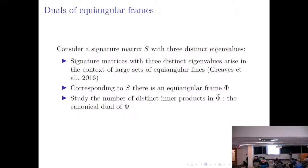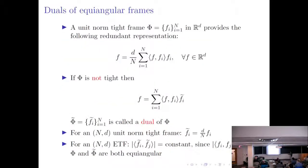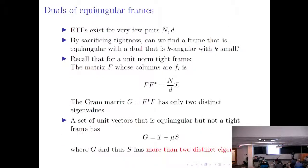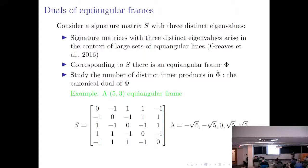Signature matrices with three distinct eigenvalues have been studied extensively in the context of large sets of equiangular lines — notably in a paper by Greaves and others. For any such signature matrix, we can correspond a particular equiangular frame. We now want to look at the distinct inner products of the canonical dual. The dual is not unique because this is a redundant set, but we focus on the canonical dual and examine how many distinct inner products it has.